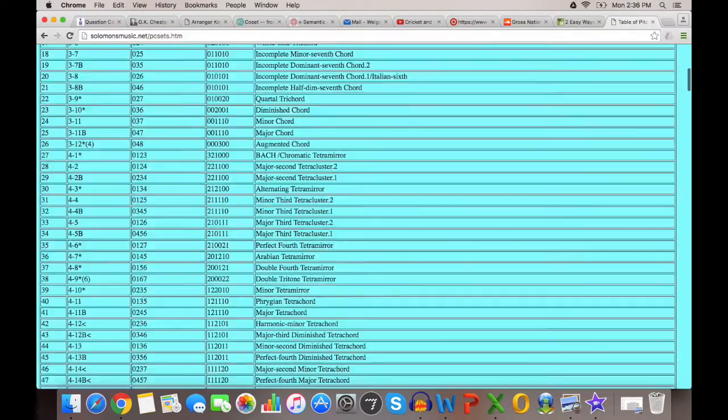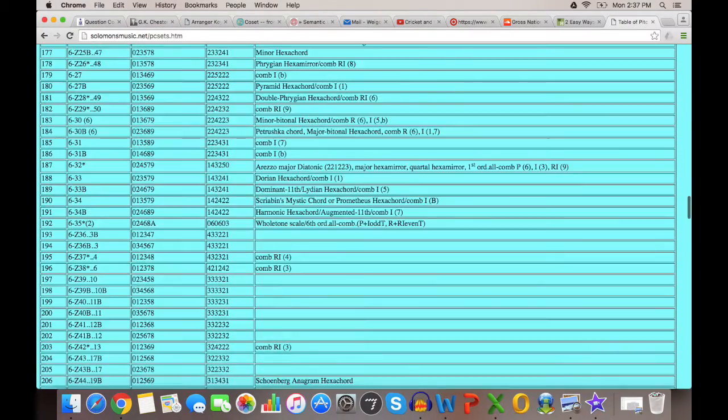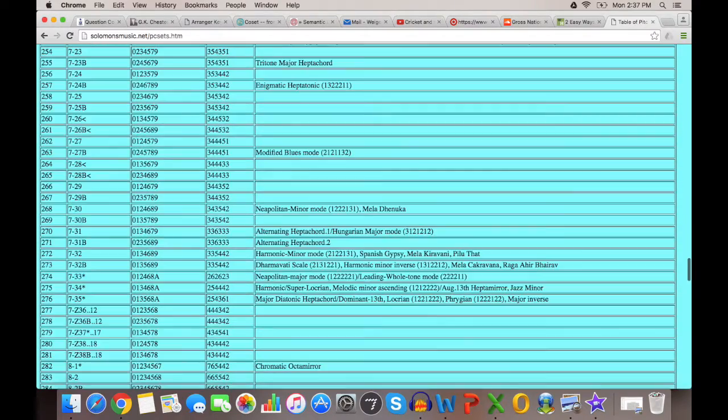Alan Fort, a famous theorist, even wrote down all of the pitch class sets in 12 equal, and in case you were wondering how many there are, there's 224 of them.